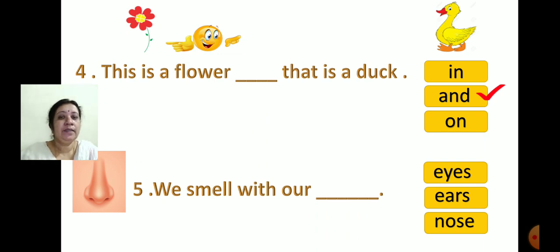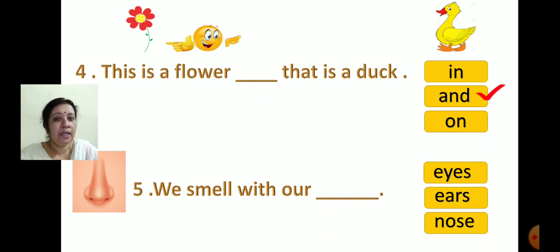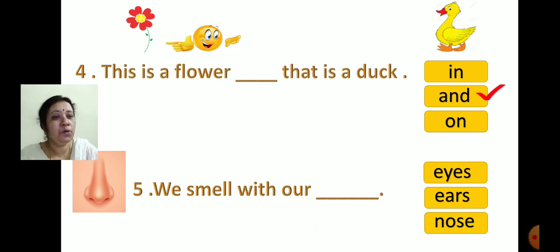Now see the fifth one: 'We smell with our dash.' The options are Eyes, Ears, and Nose. What do we do with our eyes? We see with our eyes. What do we do with our ears? We hear with our ears. And what do we do with our nose? We smell with our nose. So the correct option is nose. Click on nose. Understood?